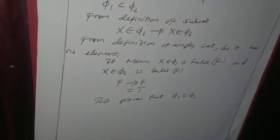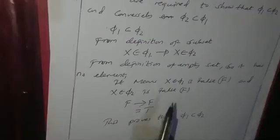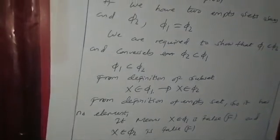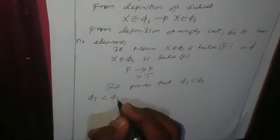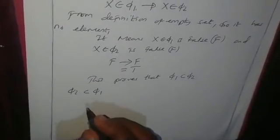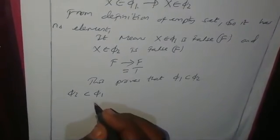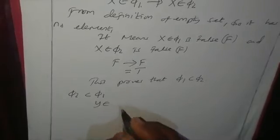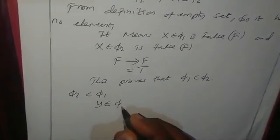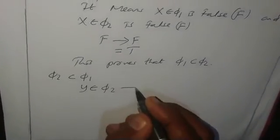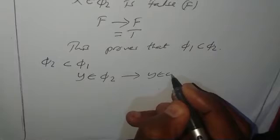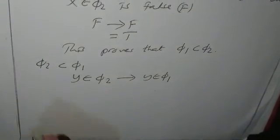Let us look at the second case, which we are required to prove: that empty set two is a subset of empty set one. From the definition of an empty set, if Y is an element of empty set two, then Y must also be an element of empty set one.